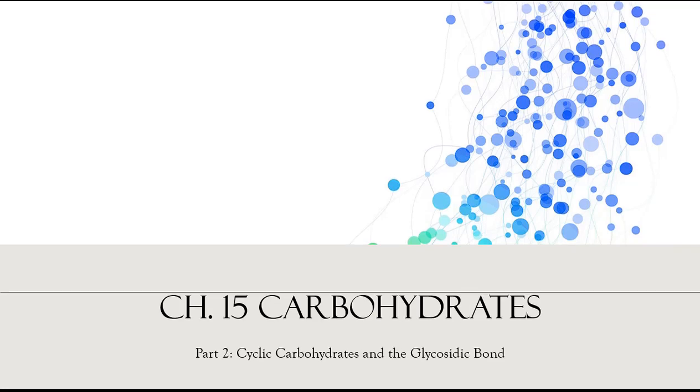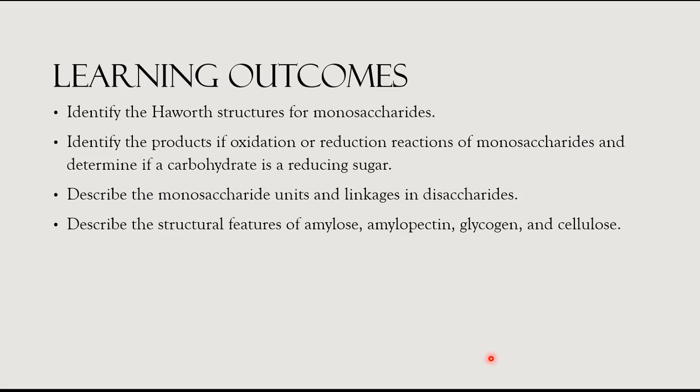Welcome back to Chapter 15, our lecture on carbohydrates. We are now focusing on part two, the second half of the chapter, covering cyclic carbohydrates, the types of reactions carbohydrates can undergo, the glycosidic bond, disaccharides, and polysaccharides. In this section we will learn how to identify Haworth projection structures for monosaccharides, identify products of oxidation or reduction reactions, determine if a carbohydrate is a reducing sugar, describe monosaccharide units and linkages within disaccharides, and describe the structural features of amylose, amylopectin, glycogen, and cellulose.